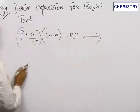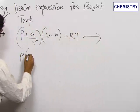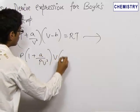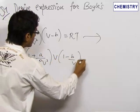Taking P and V common from the first and second bracket respectively, we get P into 1 plus A upon PV square into V into 1 minus B upon V equals RT.